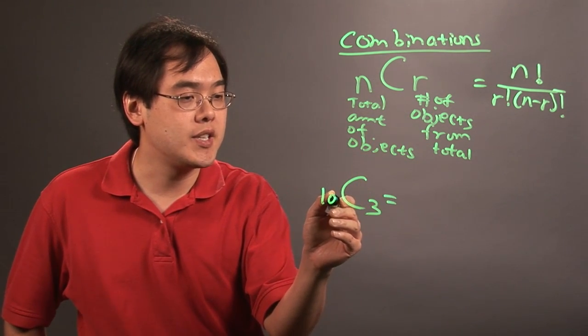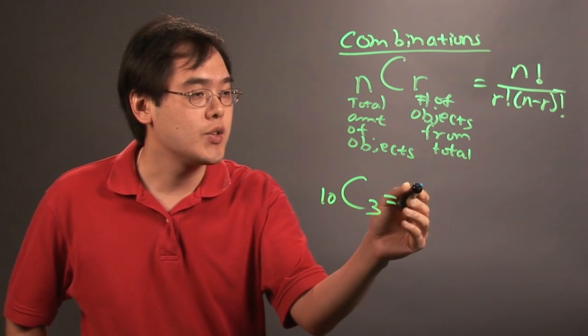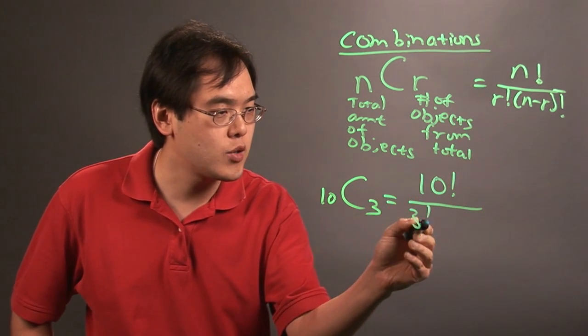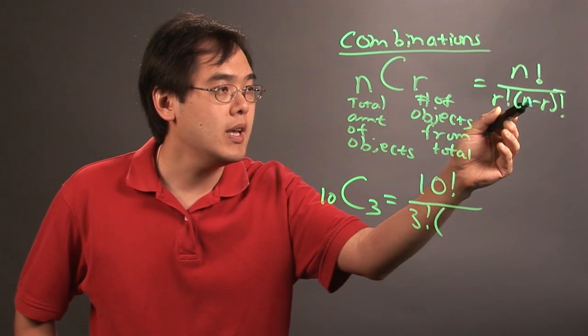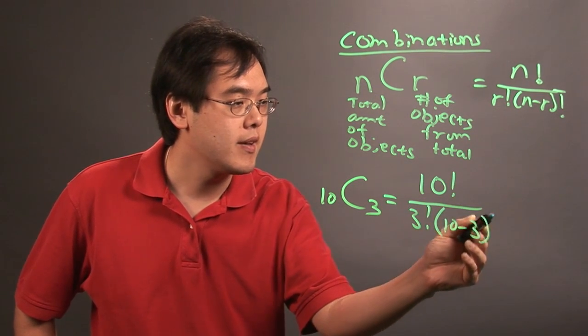Basically, the idea here is 10 is going to replace the n and 3 is going to replace the r. So you have 10 factorial over r is 3, so 3 factorial, times n is 10 minus r is 3, factorial.